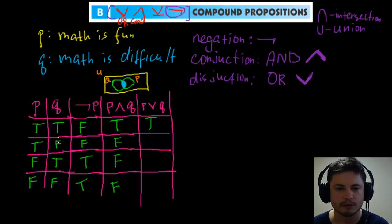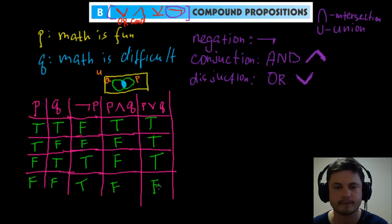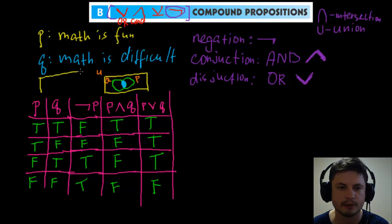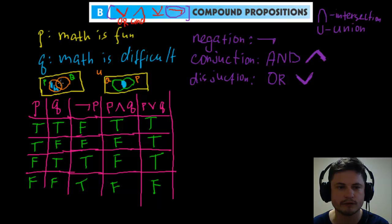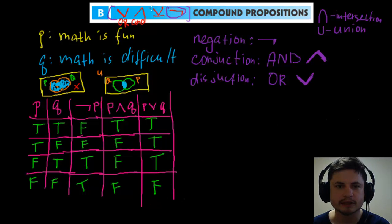Disjunction includes when either one is true or both are true. The only case where disjunction is false is the last row where both are false — math is not fun and math is not difficult. On a Venn diagram, p or q includes the entire area of both circles (their union), but not the outside area where neither applies.